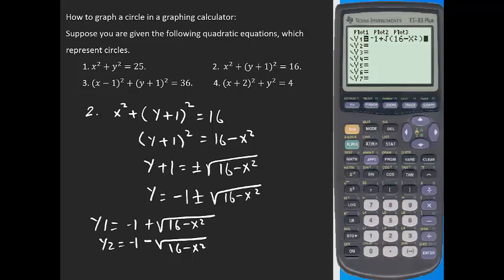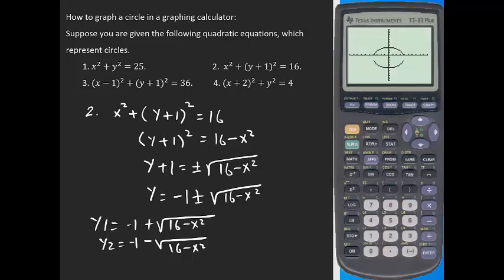Watch carefully how to type this: for y2, start with the negative sign, then the minus sign, then second, square root, 16 minus x squared. Be careful — if you start with a negative sign at the beginning, use the negative key, not the minus key, or you will get an error message. In this example you can clearly see that the center is at (0, negative 1), which is exactly where the center of the circle should be.